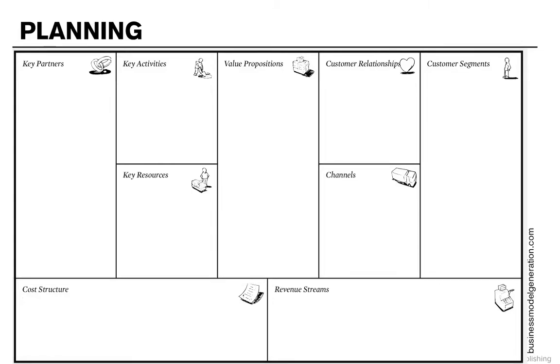Here we have the Business Model Canvas that we talked about in the Concepts section. You can download this at businessmodelgeneration.com. We're going to go over this now for the specific example of Leonid Systems.